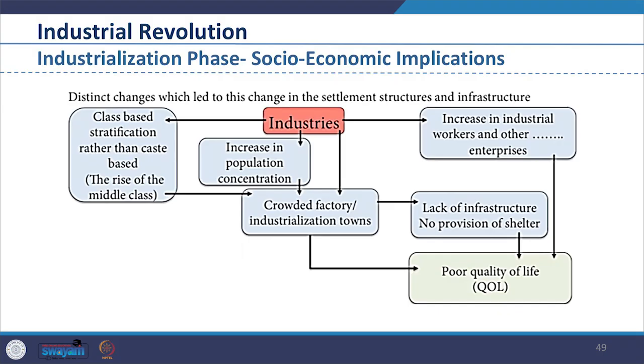Industries led to class-based stratification — middle class, working class and industrial people. Laborers lived in crowded areas with lack of infrastructure, leading to poor living conditions. Industrialization brought change in cities; living and working conditions worsened, causing class tensions. Cities expanded in size holding large-scale factories, while living conditions were cramped and crowded, leading to sickness with no safety.